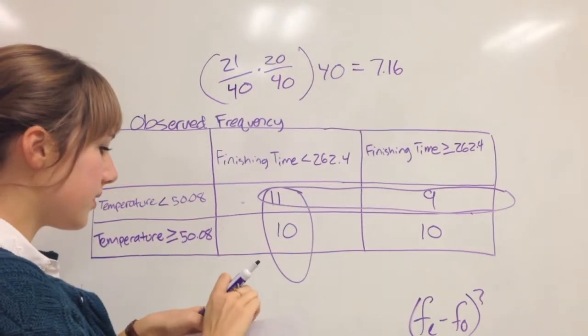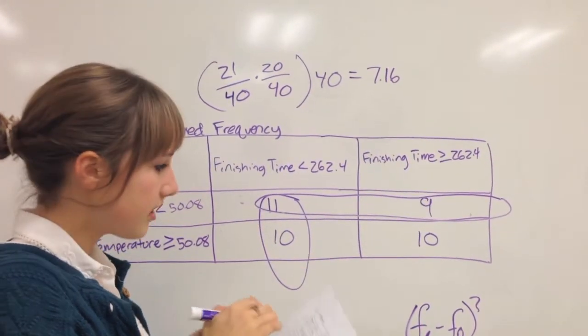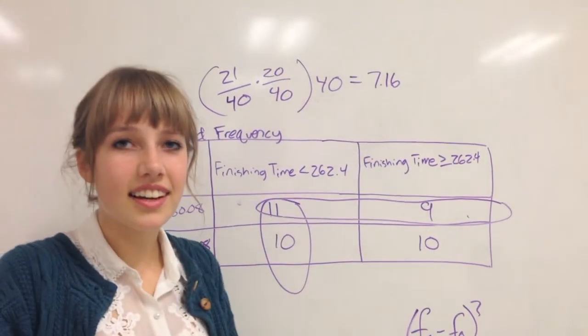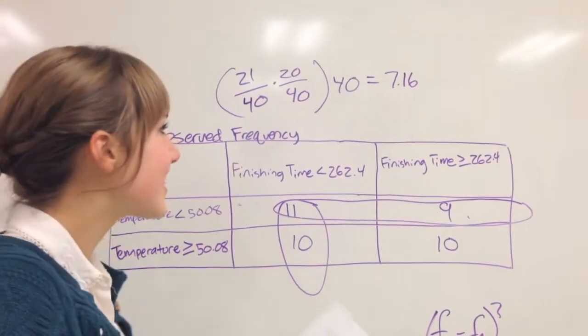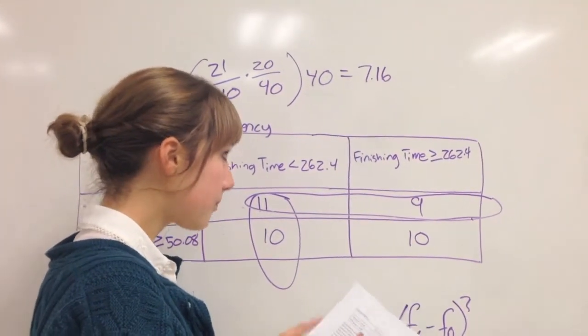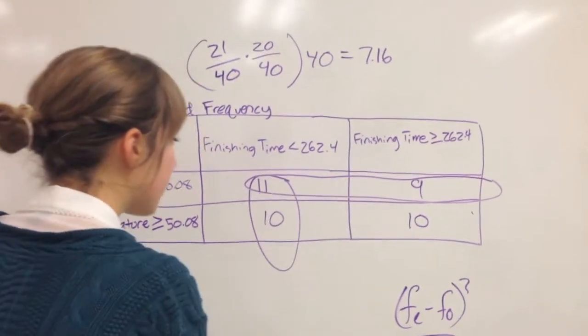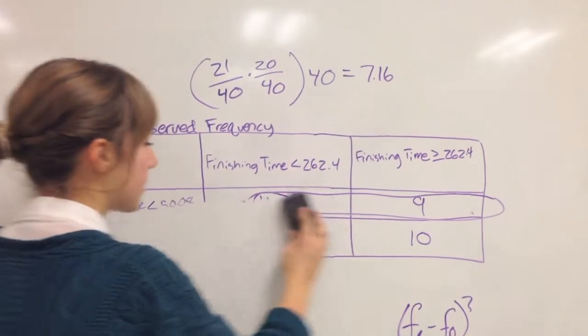Now I'm going to explain how to find the chi-square. So you do that same thing for all of them. I'm going to find chi-square.